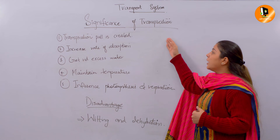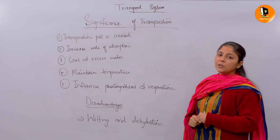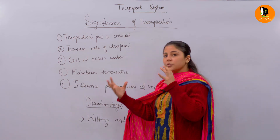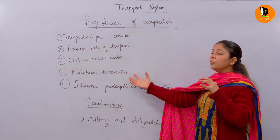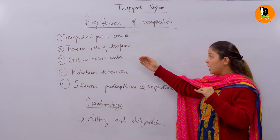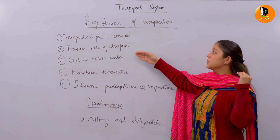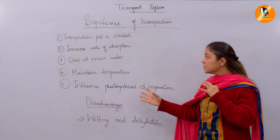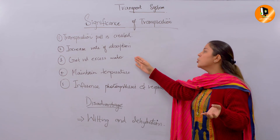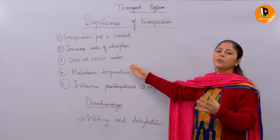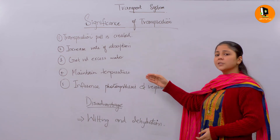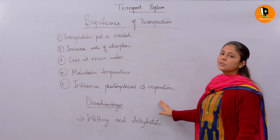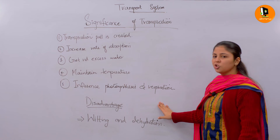Those are the five important significances of transpiration. To recap: transpiration pull is created; it increases the rate of absorption; it helps get rid of excess water because more absorption takes place and transpiration removes that excess; it maintains temperature; and it influences the rates of photosynthesis and respiration.